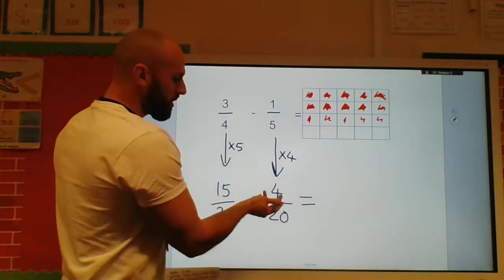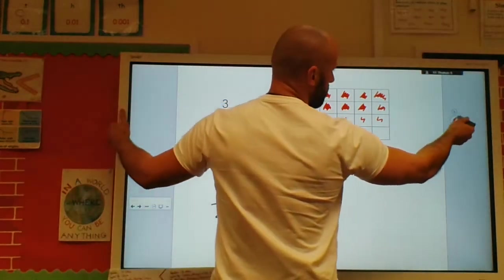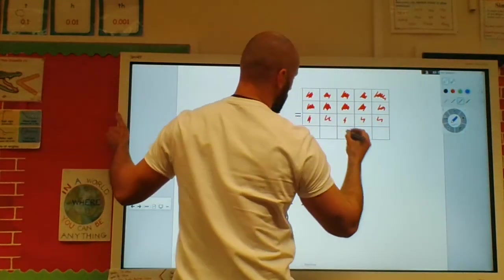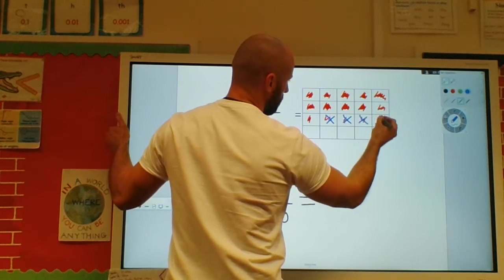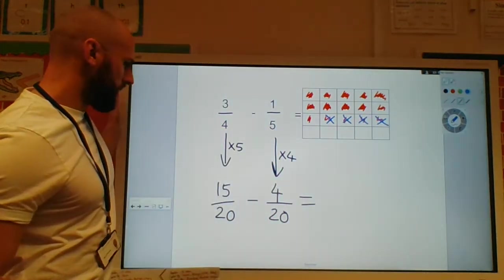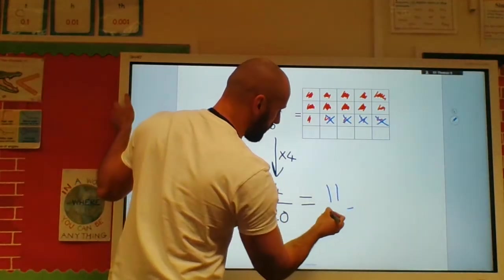I'm going to take away four-twentieths. So let's take a look at what that looks like. So I've taken away four-twentieths. That gives me eleven-twentieths.